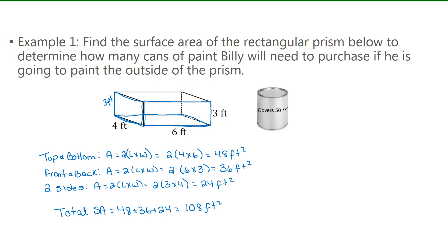Now to determine how many cans of paint are needed, we take the total surface area and divide that by the area of each can, which is 50. I get 2.16. So I'll need two full cans of paint and part of another can. Now if you're going to the store to buy cans of paint, you'll need to buy three. So I'll say that Billy will need to purchase three cans of paint.